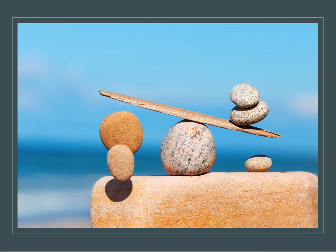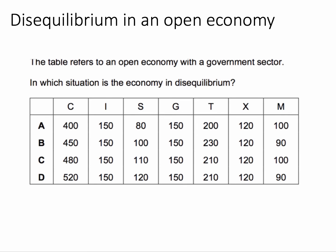Here's the question: the table refers to an open economy with a government sector. An open economy of course trades, so we're considering exports and imports. The government sector taxes and spends. The question is: in which situation is the economy in equilibrium?